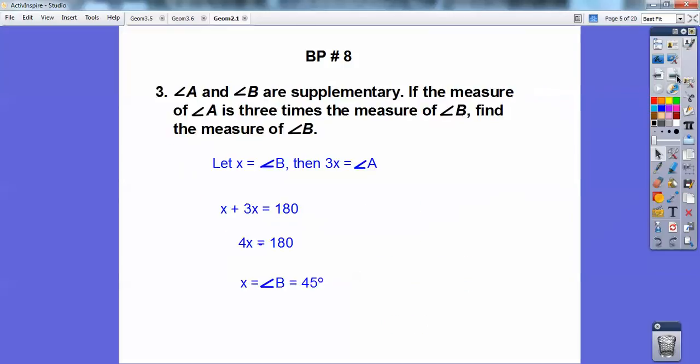Number 3. A and B are supplementary angles. If the measure of angle A is 3 times the measure of angle B, find the measure of angle B. I always let x be the smaller of the angles. And A is 3 times B, so I let x be equal B. So 3x equals A. And supplementary means 180. So now I can add these x plus 3x equals 180, or 4x equals 180. And x, when you divide by 4, that's going to equal angle B. That's going to equal 45 degrees.